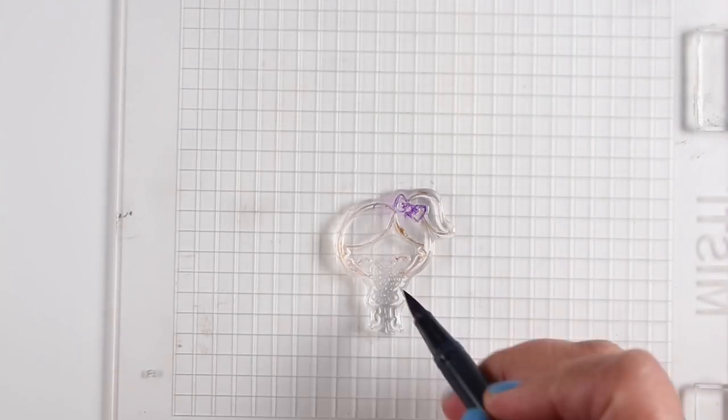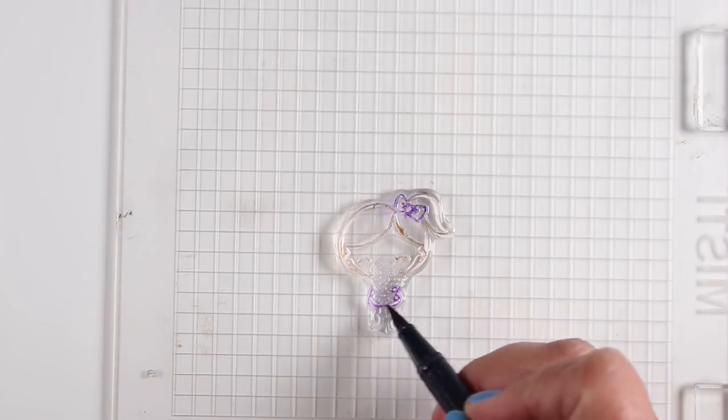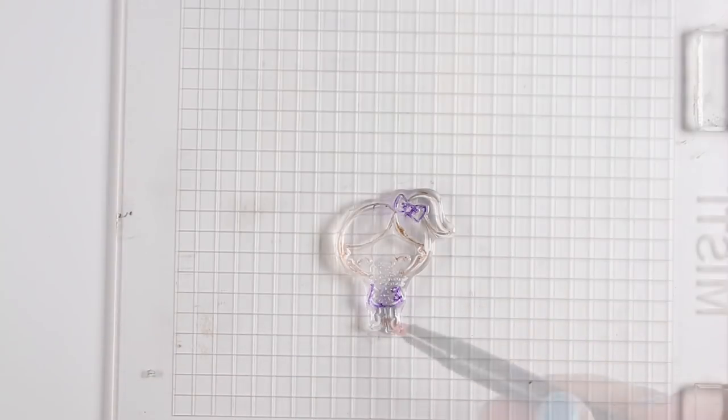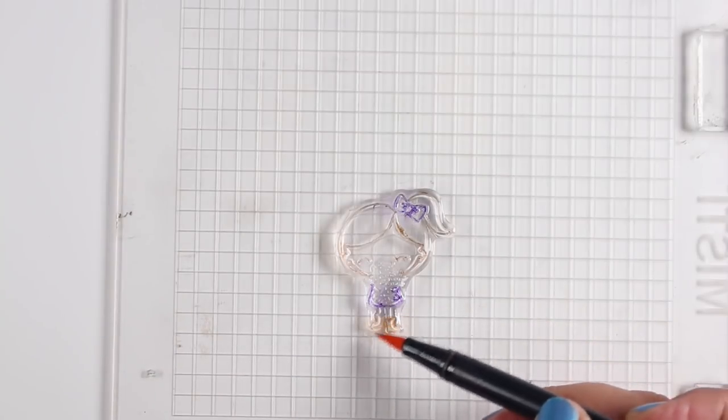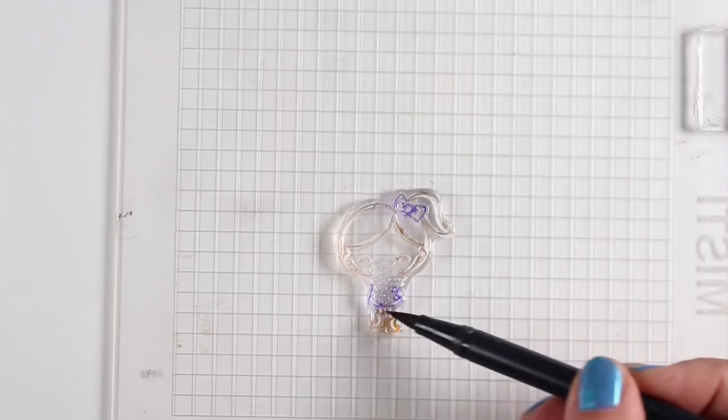You can do one section of hair. You can do just the bow and stamp that, and then do just the dress and stamp that, that sort of thing. So if you're using a MISTI, it makes it super easy to just keep realigning the whole thing at the same time.